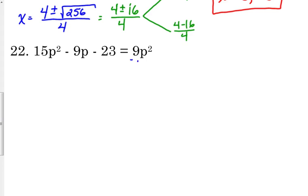So we need to start by getting everything on one side. In this case I'm going to subtract the 9p squared. 15 minus 9 is 6p squared minus 9p minus 23 equals 0.